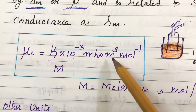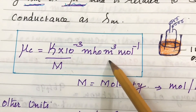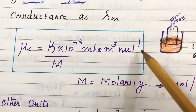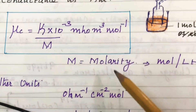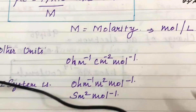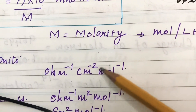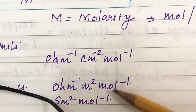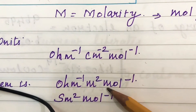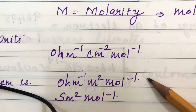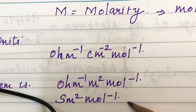The unit of molar conductivity is meter cubed per mole, or mole power minus 1. Other units of molar conductance are: ohm power minus 1, centimeter squared, mole power minus 1; or ohm power minus 1, meter squared, mole power minus 1; and also S·m² mol⁻¹.